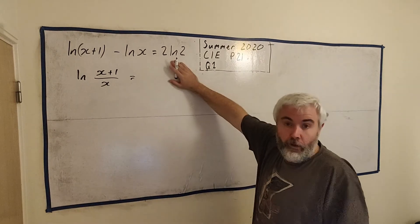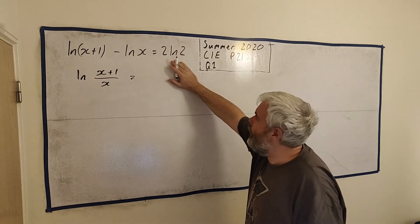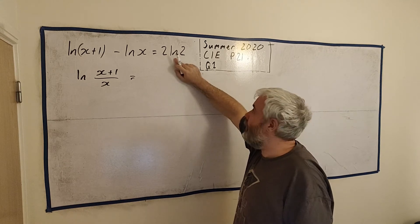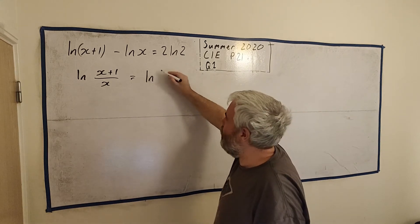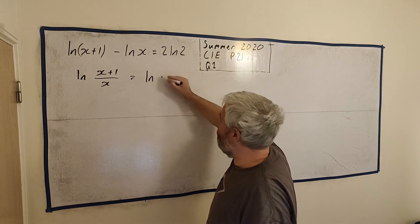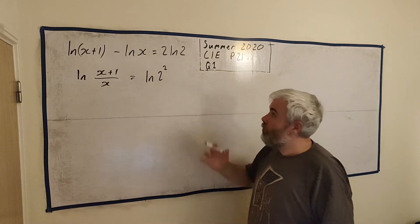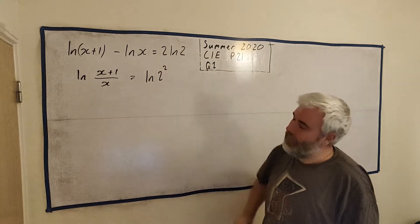But there's another rule involving this. When a number multiplies by a natural log, it's the same as natural log with that number as a power. This 2 is the one that was already here, and this 2 becomes a power here. So I can rewrite from that to this.